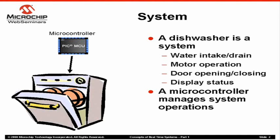So what is a system? A system is something that solves a problem. For example, to solve the problem of dirty dishes, we can design a system of a dishwasher. As we know, when we start a dishwasher, many things happen — for example, water intake, motor operation that swirls water to clean dishes, water drain, etc.